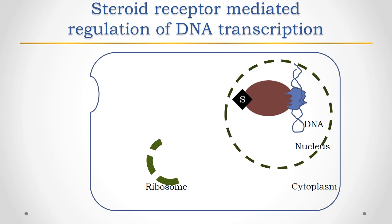The agonist-receptor complex with the exposed DNA binding site then associates with the DNA of specific genes. This stimulates RNA polymerase activity, and a specific mRNA is then synthesized.